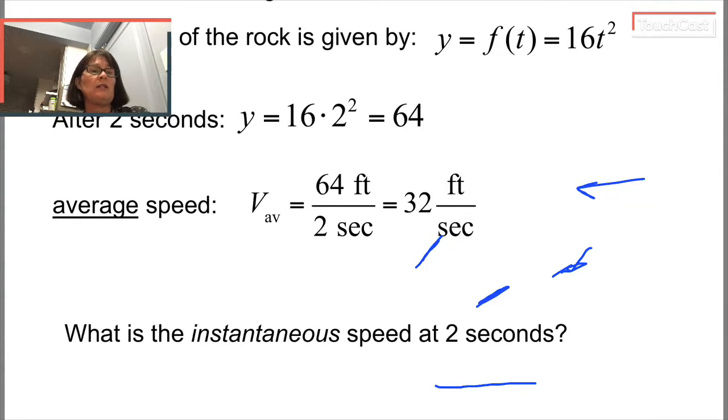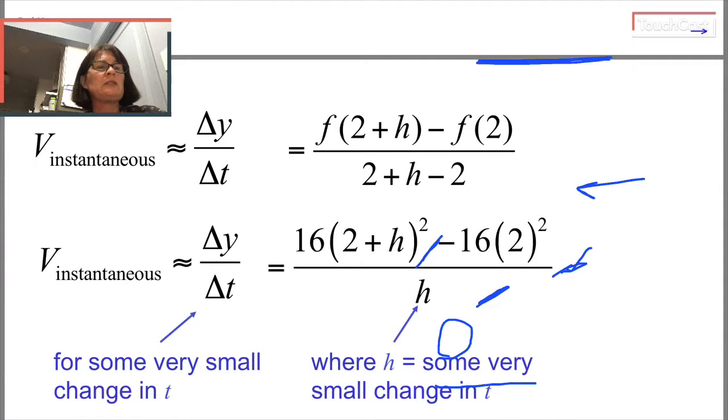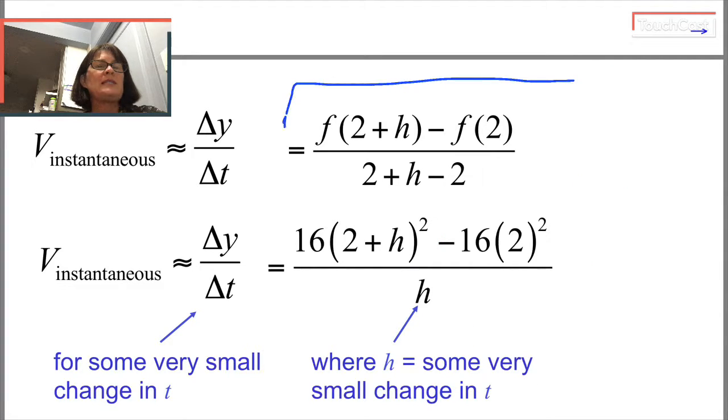You might find that the equations, like those functions for position, are different. You might find that the particular time value you've been asked to explore is different. In this case, we were exploring instantaneous speed at two seconds. So you're going to have to think about what ways this expression is going to be different. How is this going to be different for the problems you're assigned?